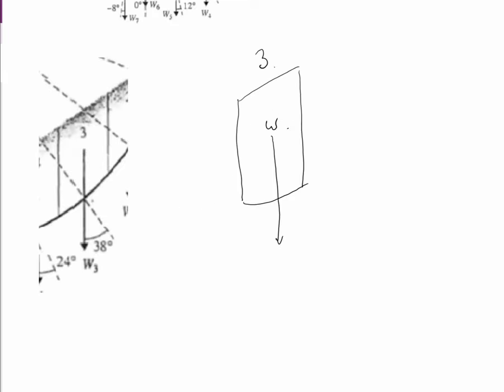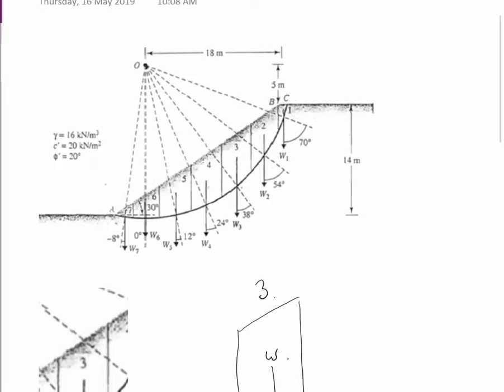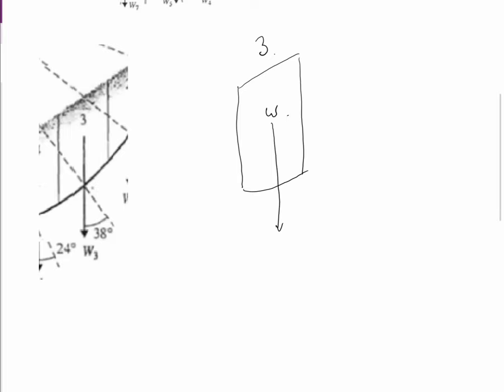I've pulled slice 3 out as an example. And really the first thing we need is the weight of it. Using the gamma provided at the top here, 16 kN. We can find the average height from this side and this side. And with a little bit of trig we can find the width of it.